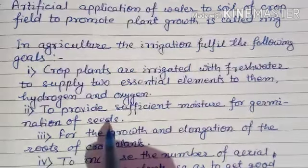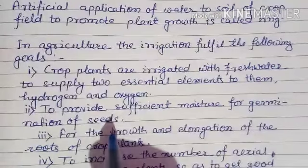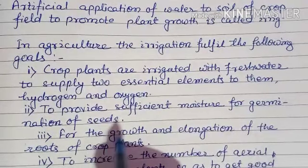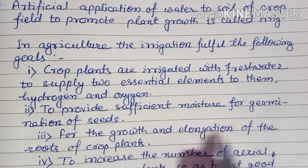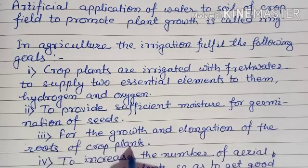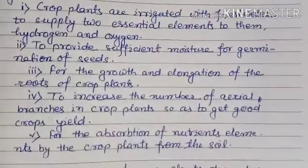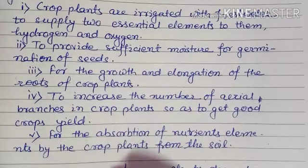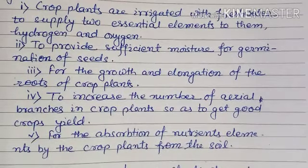The next goal is to provide sufficient moisture for germination of seeds. This is because seeds do not germinate in dry soils. The third goal is for the growth and elongation of the roots of crop plants, because plants fail to develop and elongate in dry soils.